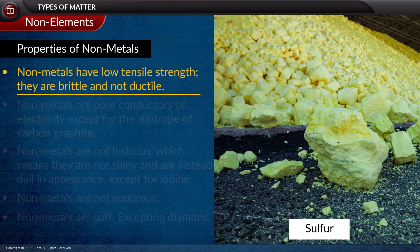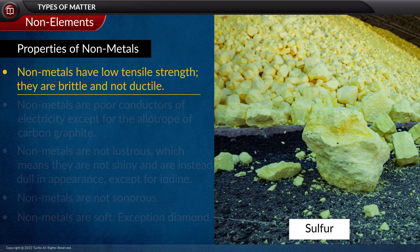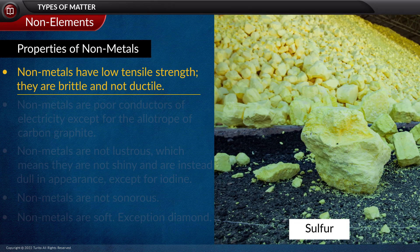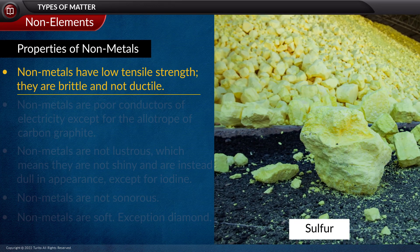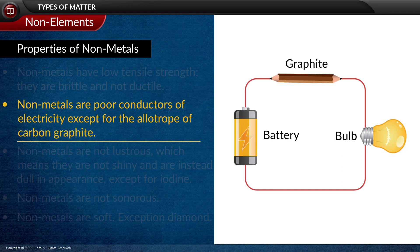While non-metals have low tensile strength, thus they don't possess the property of malleability. Instead, they are brittle and are not ductile. Non-metals are poor conductors of electricity except for the allotrope of carbon, graphite.